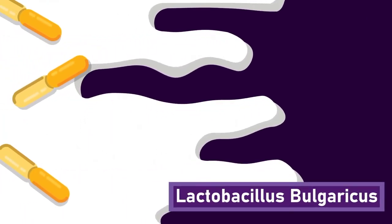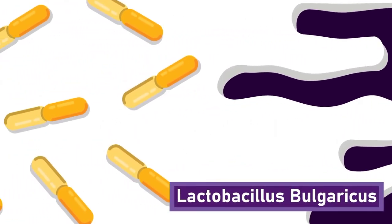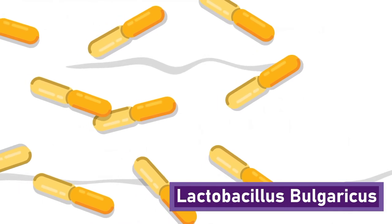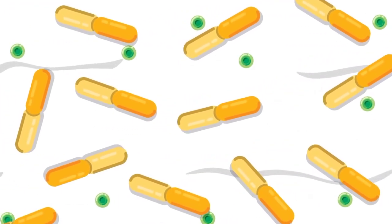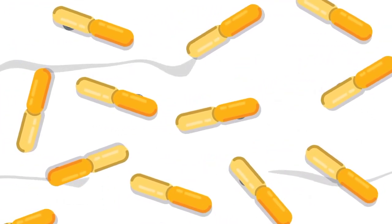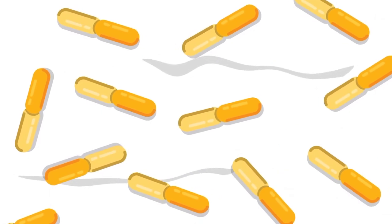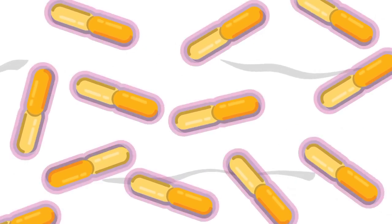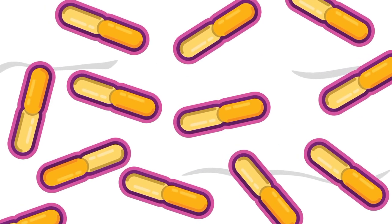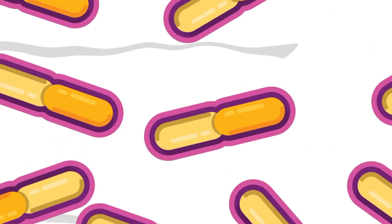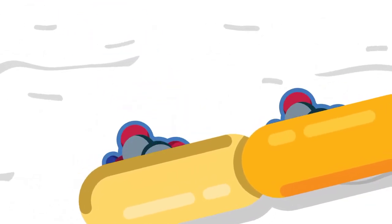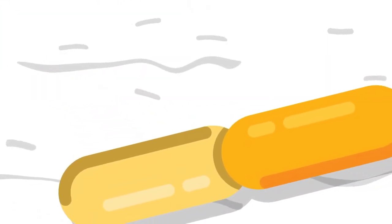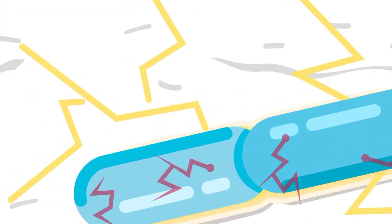Some bacteria, such as Lactobacillus bulgaricus, cause milk to turn sour and form yogurt. The bacteria feed on sugar, which is then converted into lactic acid and energy. This energy is also equivalent to 2 ATP. The bacteria turn glucose into 2 lactic acid and energy of 2 ATP.